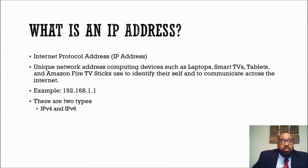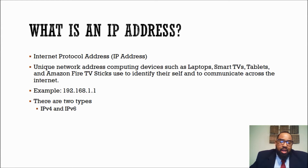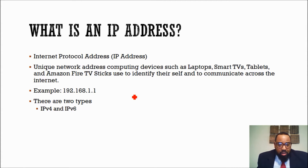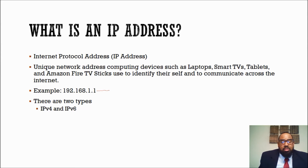So what is an IP address? An IP address — internet protocol address — is a unique network address that computing devices such as laptops, smart TVs, tablets, and Amazon Fire TV sticks use to identify themselves and to communicate across the internet. An example of an IP address would be 192.168.1.1. Your router or Wi-Fi would assign your device an IP address, which would then be NATed to access the internet.